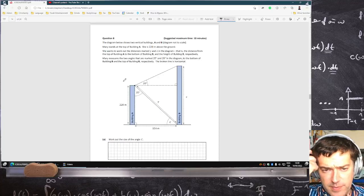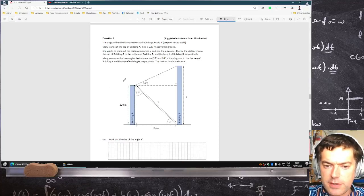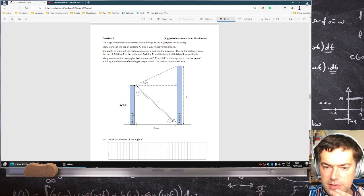Let's see what's next now. The diagram below shows two vertical buildings, A and B, not to scale. Mary's at the top of A. Work out the size of angle C.